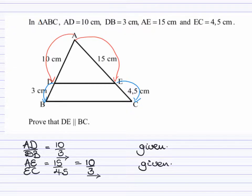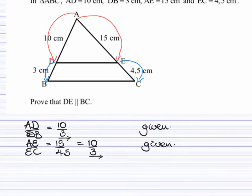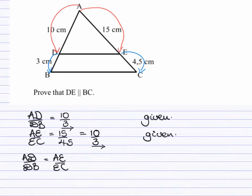Now, we see that the ratio AD divided by DB is equal to the ratio AE divided by EC. If that is the case, we can then conclude that DE is therefore parallel to BC.